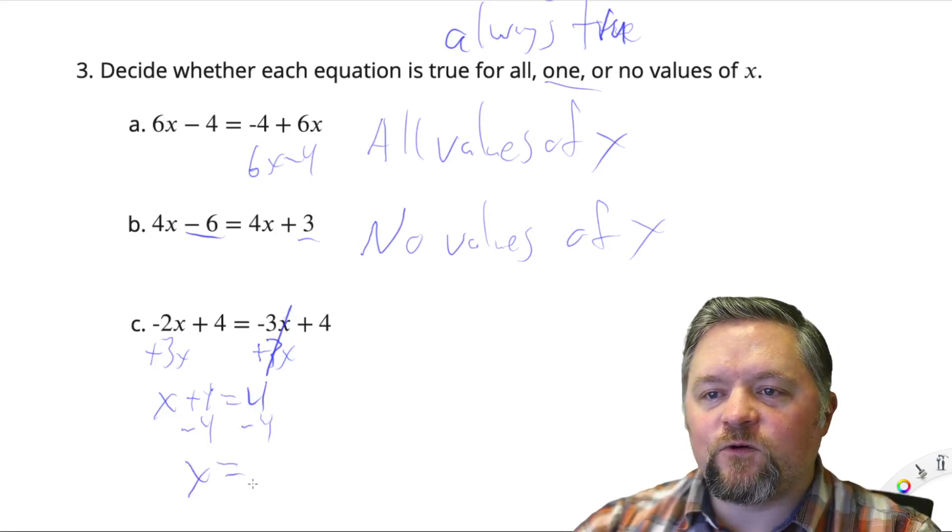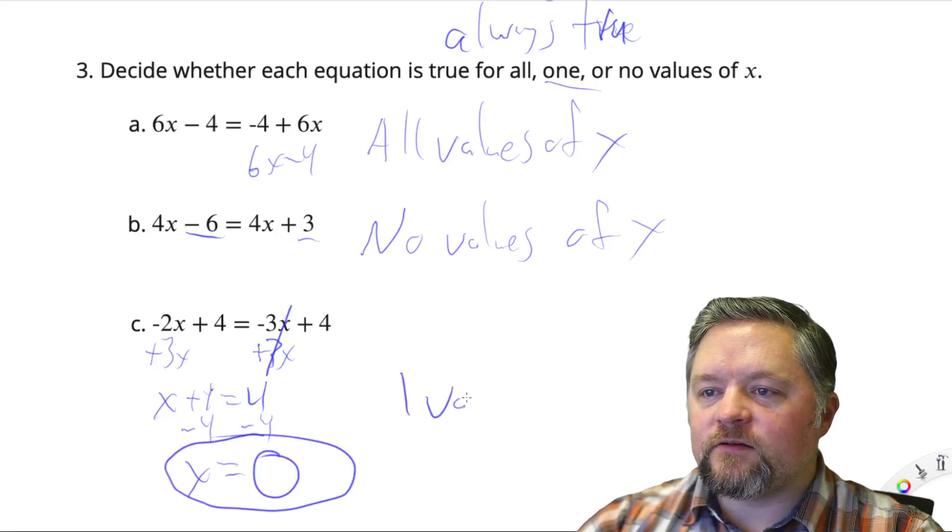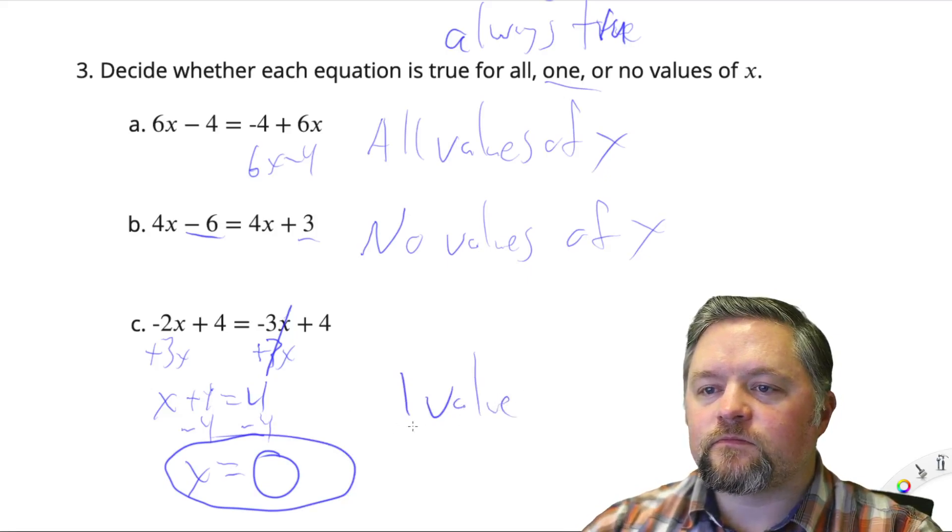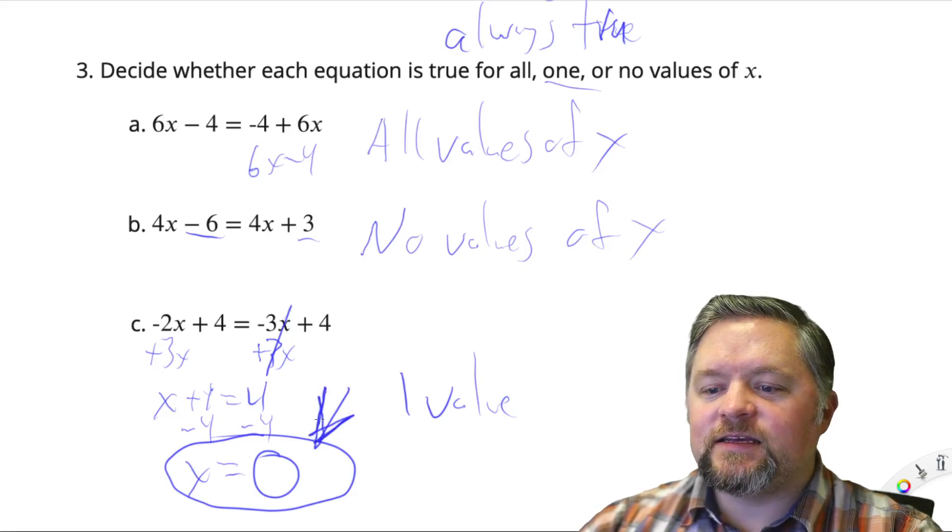x equals, well, what's 4 take away 4? 0. That is true for one value. Because x equals 0 is a value.